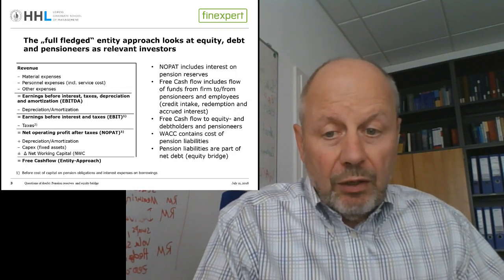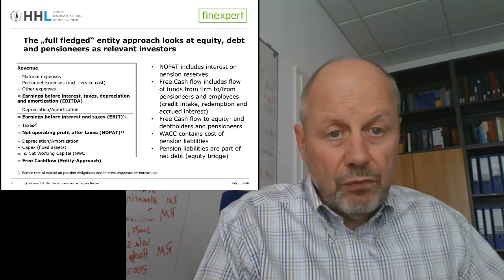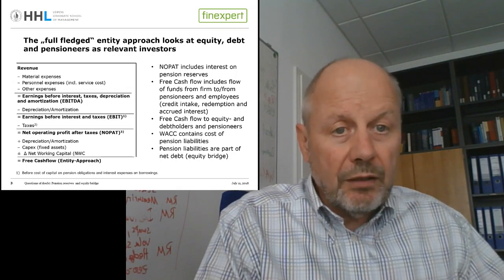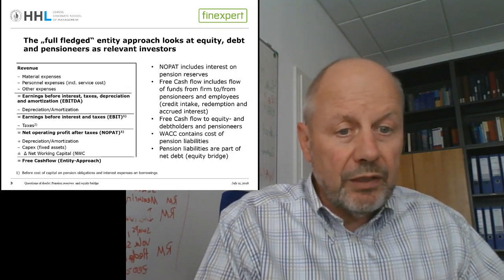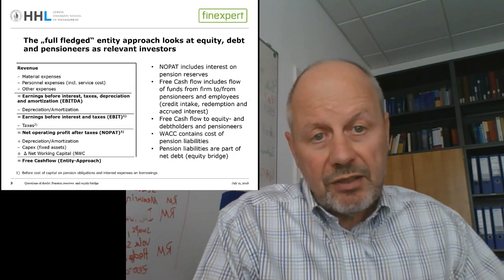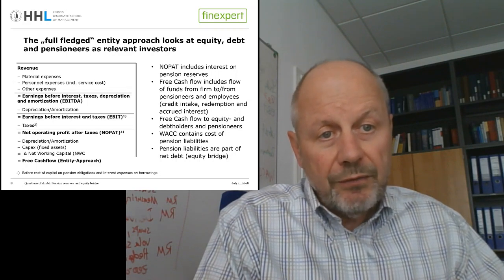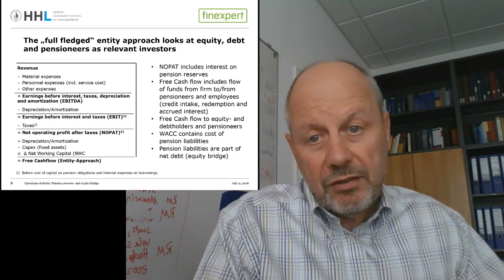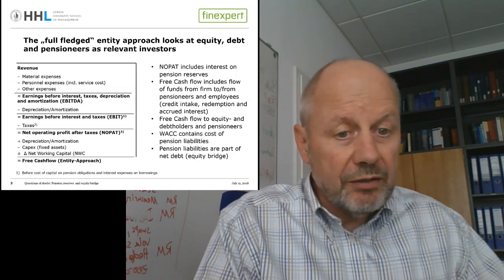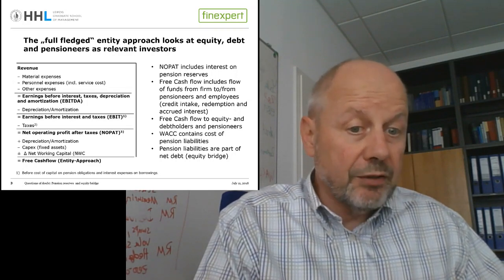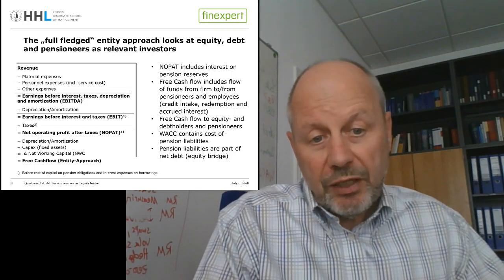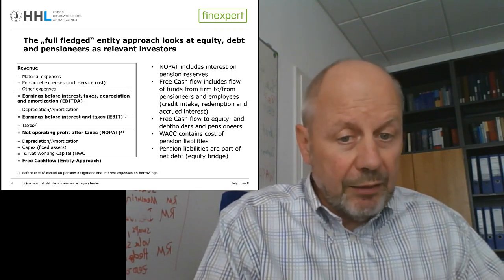If we take these free cash flows to the three investor classes and discount them with the WACC as the weighted average cost of capital over the three investor classes, we get the enterprise value as the sum of the present values of equity holders, straight debt holders, and pensioners or employees. That means we have to deduct the pension liabilities as part of the relevant debt on our way to the value of equity. So pension liabilities are part of the equity bridge.